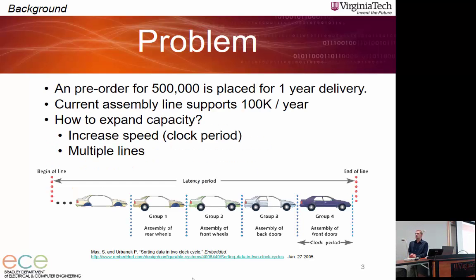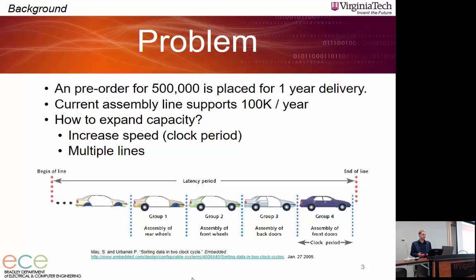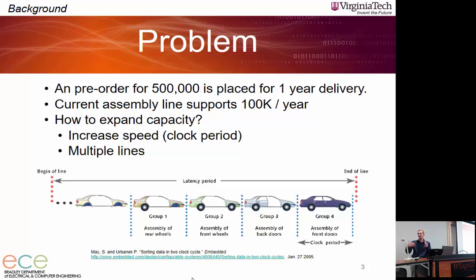Suppose you have a problem such as this: you're the owner of a car company and you get a pre-order of 500,000 cars that you need to deliver in one year's time. You have a production assembly line that can generate 100,000 cars per year, so you need to expand your capacity. One option is to increase the speed of your assembly line — analogous to increasing clock speed in digital circuits. An alternative is to put in multiple production lines: instead of one line at 100,000 cars per year, you have five lines generating 500,000.